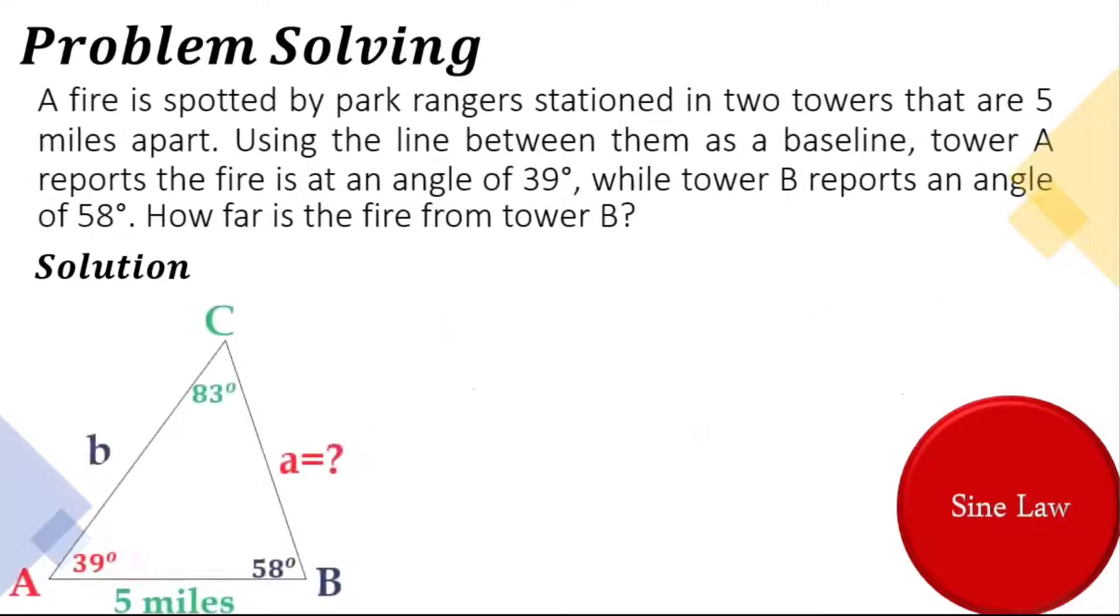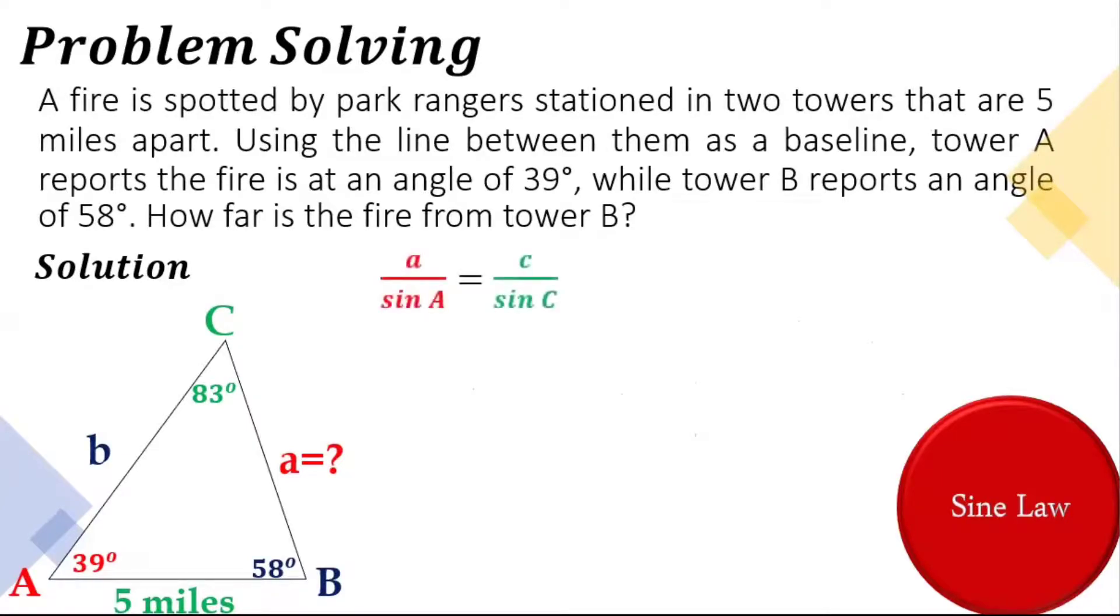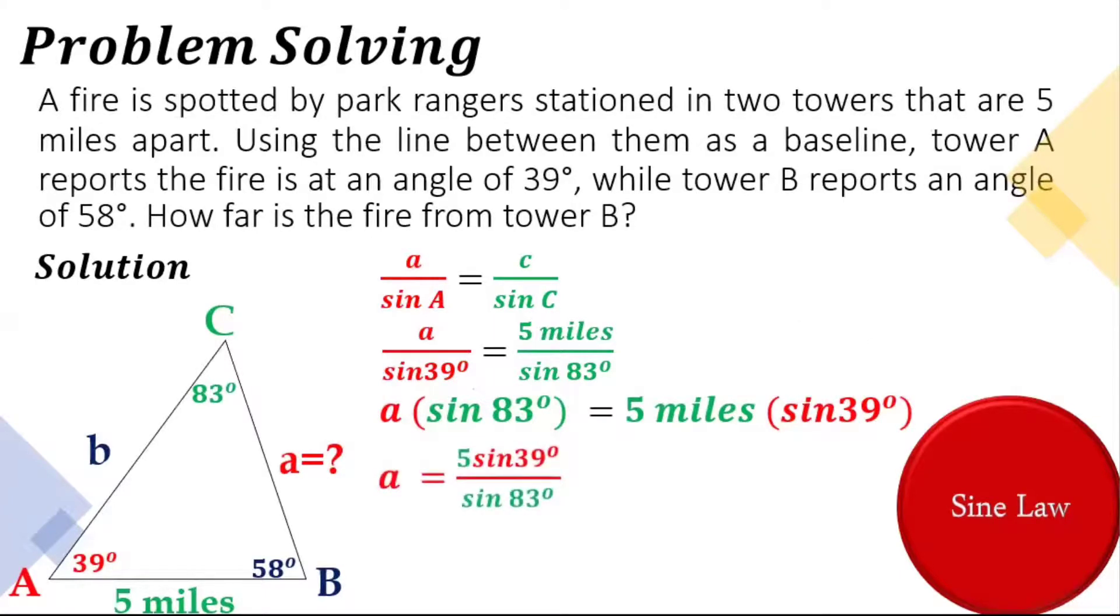This time we will be looking for side a, the distance between the fire and the tower B. So we will be using a over sine A is equal to c over sine C. a over sine 39 degrees is equal to 5 miles over sine 83 degrees. Let's do cross multiplication and divide both sides by sine 83 degrees. And we get this, a is equal to 5 miles times sine 39 degrees over sine 83 degrees.